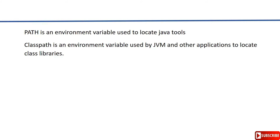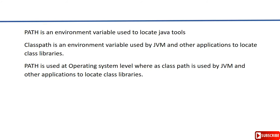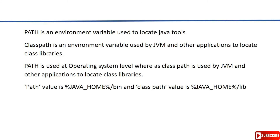The second difference is that PATH is used at the operating system level, whereas CLASSPATH is used by JVM and other applications to locate class libraries. The third difference is the value of PATH is JAVA_HOME/bin, while the value of CLASSPATH is JAVA_HOME/lib.